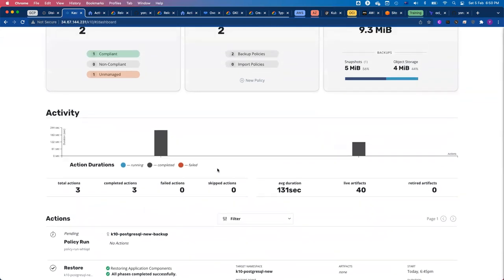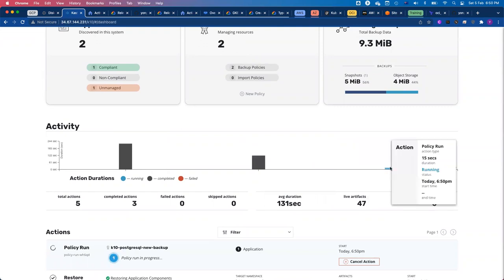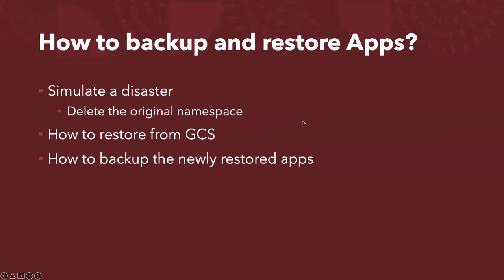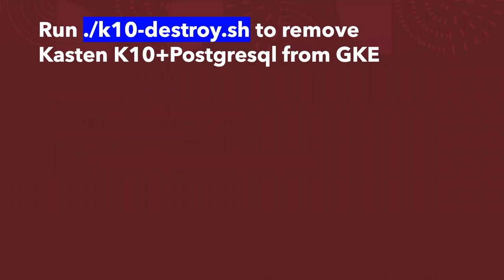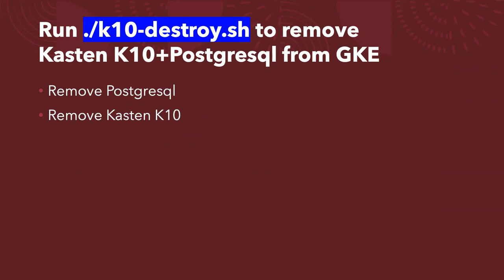That basically covers everything — how to backup and restore containers, using PostgreSQL as a test database. Once you've done all of this, if you want to clean up Kasten K10 and PostgreSQL, you can run K10-destroy.sh. It will remove the PostgreSQL database, remove Kasten K10, and remove the Google Cloud Storage bucket. I'm not going to run K10-destroy right now because a backup job is happening. I'll show you once the job is finished.